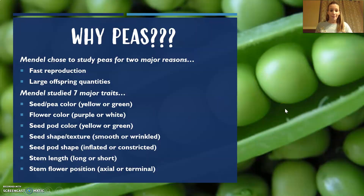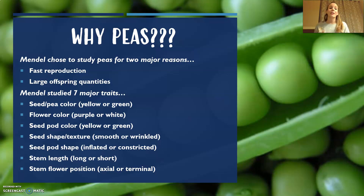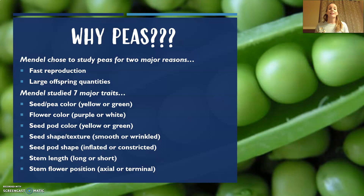So why peas? There were two major reasons why Mendel chose to study peas: they reproduce very quickly, and they also have lots of offspring when they reproduce. That made them an ideal species to study how traits are passed down through multiple generations.